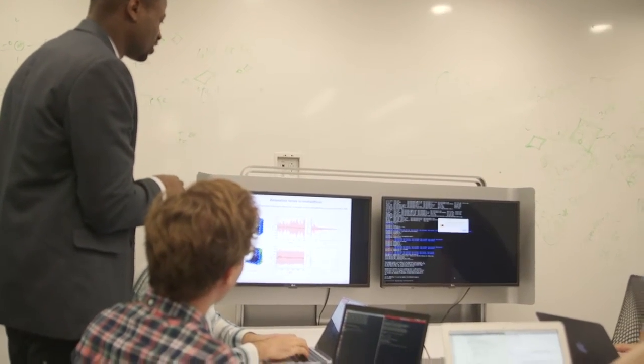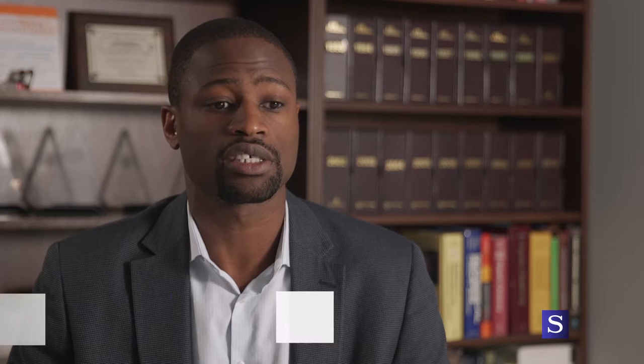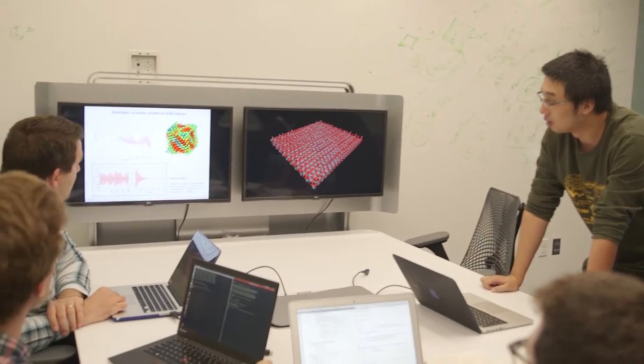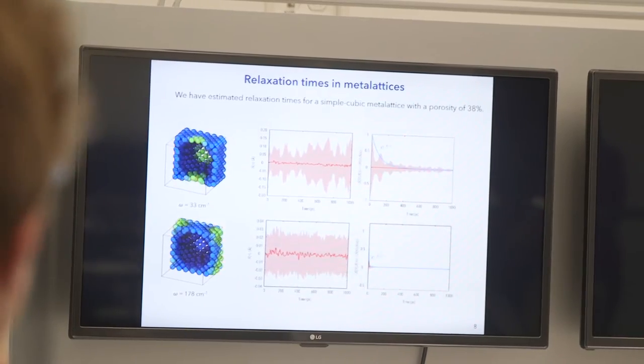The interaction between experiment and theory is something very important for this department. Experimental investigation brings new questions for computational material scientists, and we try as much as possible to help our experimental colleagues make the next generation of functional or structural materials.